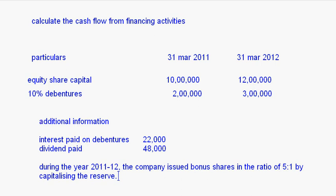This is the question — you have to find out the cash flow from financing activities. The equity share capital has increased from 10,00,000 to 12,00,000. But the additional information says the company issued bonus shares in the ratio of 5 to 1, meaning a shareholder holding 5 shares will be given 1 share as bonus. Bonus shares are given by capitalizing the reserve. Remember that whenever the company issues bonus shares, it will not be considered as issue of equity share capital in the cash flow statement, because that is not a real cash flow — they are issuing shares by capitalizing the reserve.